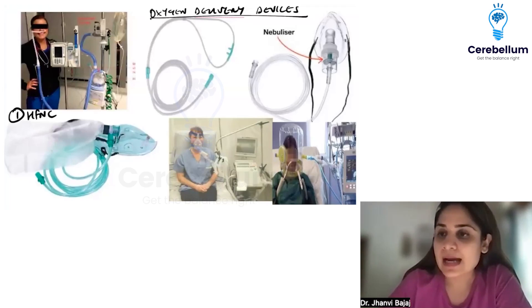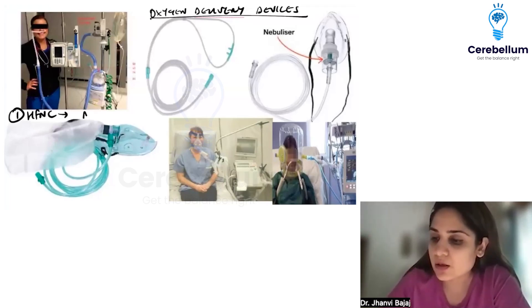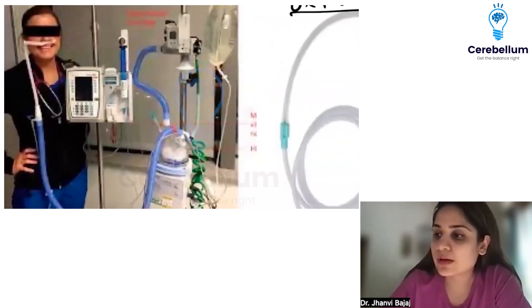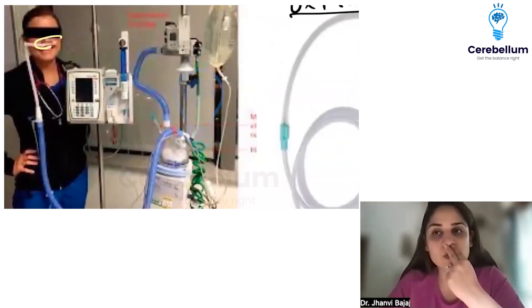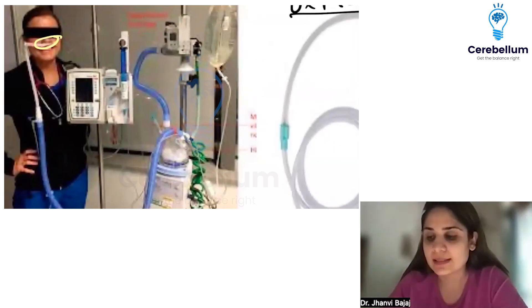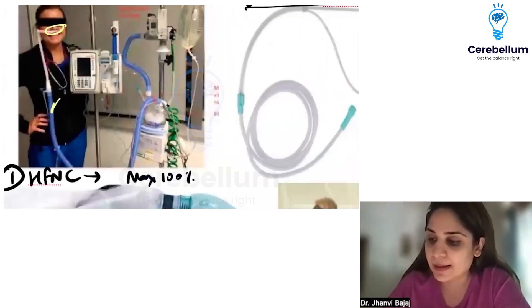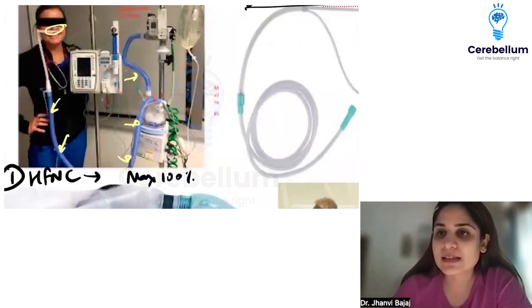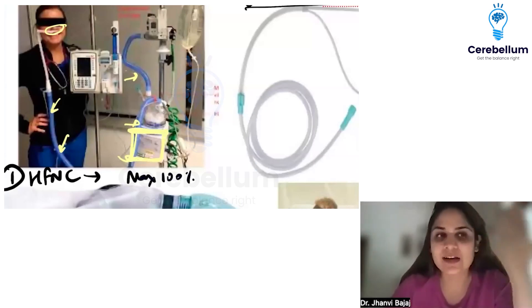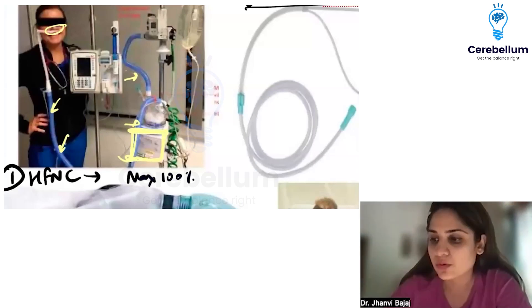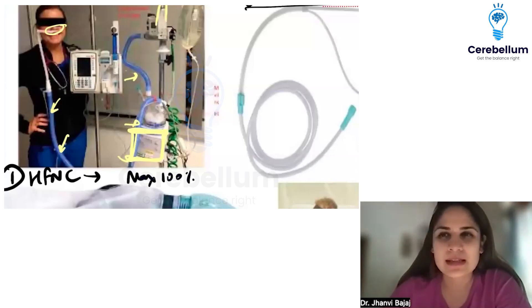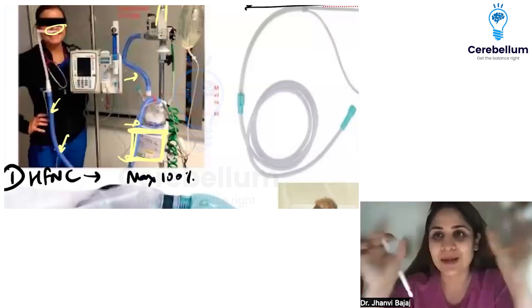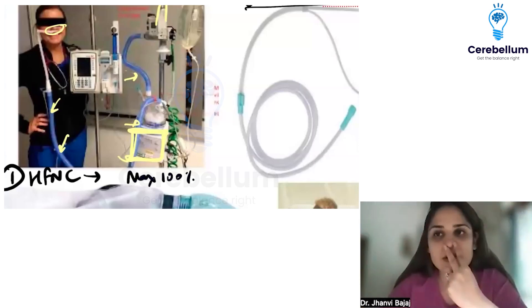High Flow Nasal Cannula can give a maximum of 100% FiO2. To identify it: the nasal cannula goes in the nose, and from there you trace a huge pipe carrying oxygen. There is a big humidifier chamber that humidifies the dry oxygen going into the nose, and then flow meters and an air-oxygen blender.